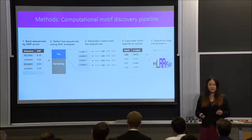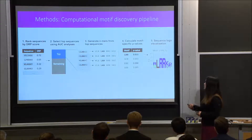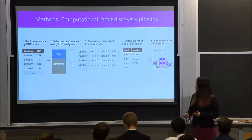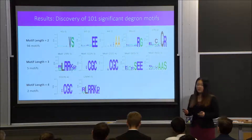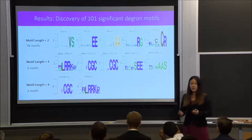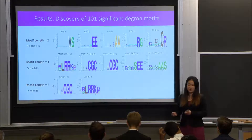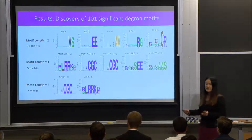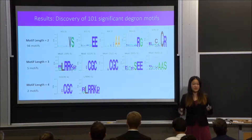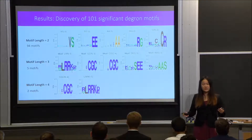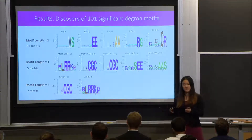We identified these significant k-mers as degron motifs. In the last step of our computational pipeline, we visualized each degron motif using a sequence logo visualization. Using this pipeline, we discovered significant degron motifs of length two, three, and four — 101 significant degron motifs in total. Sequence logos tell you how enriched an amino acid is at a certain motif position, and one advantage is that we can see whether there is any extended motif pattern beyond the range we are looking at.